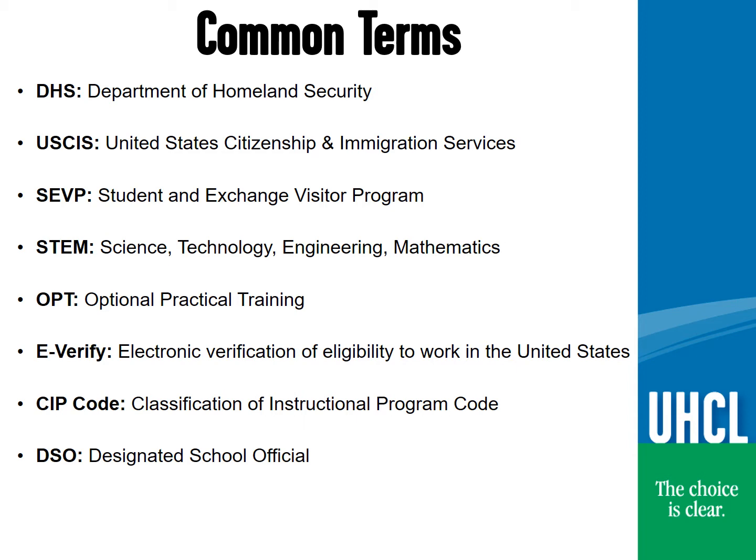The CIP code can be found on your I-20 under the Major/Program Information block. This code is a required field on the Form I-983. A link to the STEM CIP code list is provided at the end of this presentation. You can find out who your advisor is by looking at the OIAP webpage for current information. A link is provided at the end of this presentation.